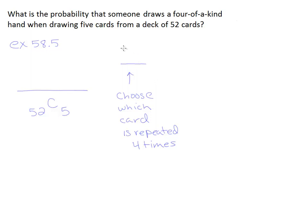Well, if you think about it, there are 13 different choices in a deck of cards, right? You can choose the aces, the kings, the queens, the jacks, or any of the digit cards from two to nine. That adds up to 13 different types of cards. So I have 13 choices for that card that's going to be repeated four times.